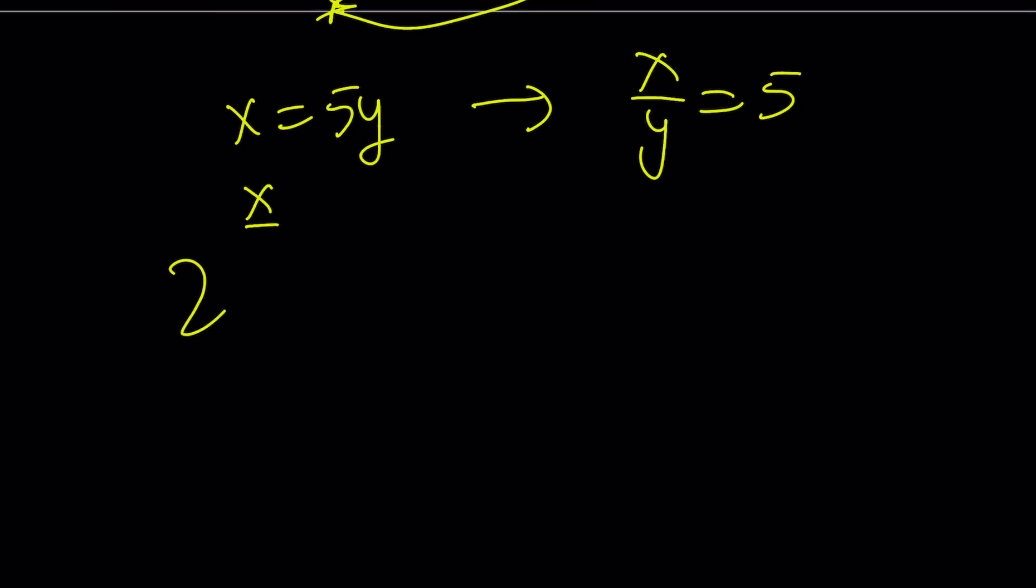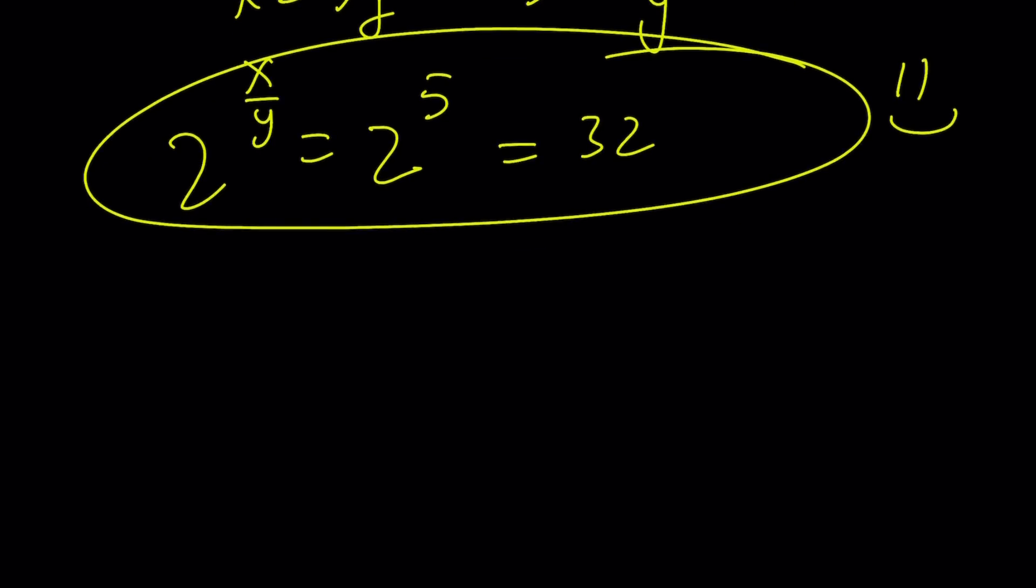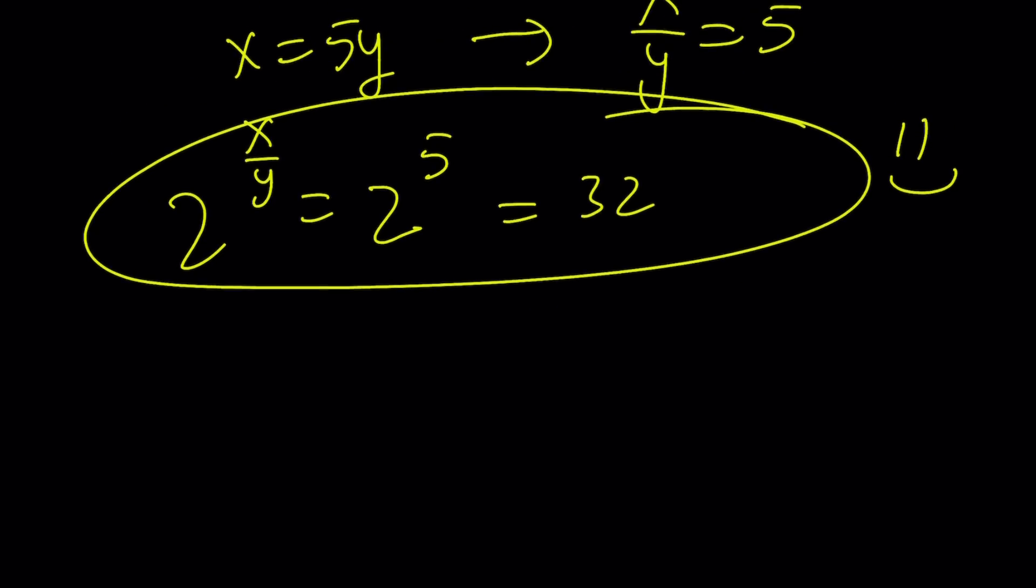From a ratio or proportion, we found another ratio. So now, 2 to the power of x over y is just going to be 2 to the power of 5, and that is equal to 32. And this brings us to the end of this video. Thank you for watching. I hope you enjoyed it. Don't forget to comment, like, and subscribe. I'll see you tomorrow with another video. Until then, be safe, take care, and bye bye.